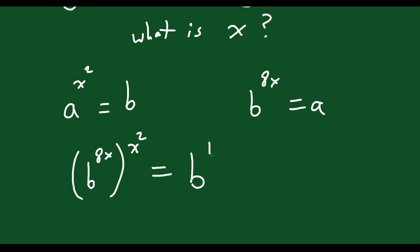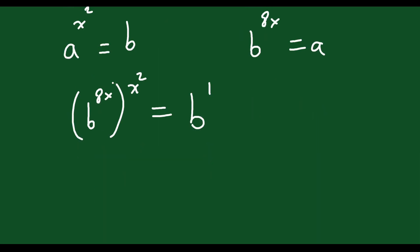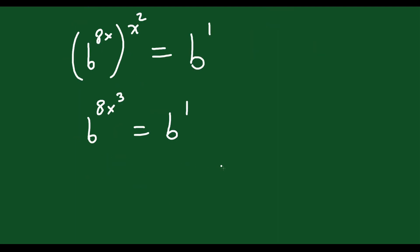Well, this b is just to the exponent 1. Once you simplify the exponent: b to the 8x cubed — because x times x squared is x cubed — and that equals b to the 1. All of a sudden you have like bases, so you can equate the exponents. You get 8x cubed equals 1, then solve for x.